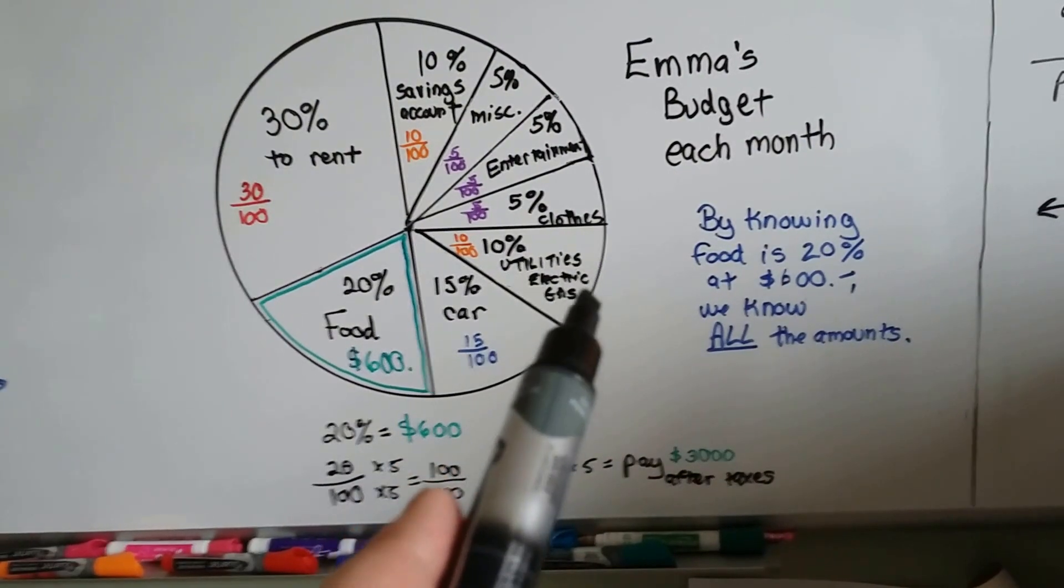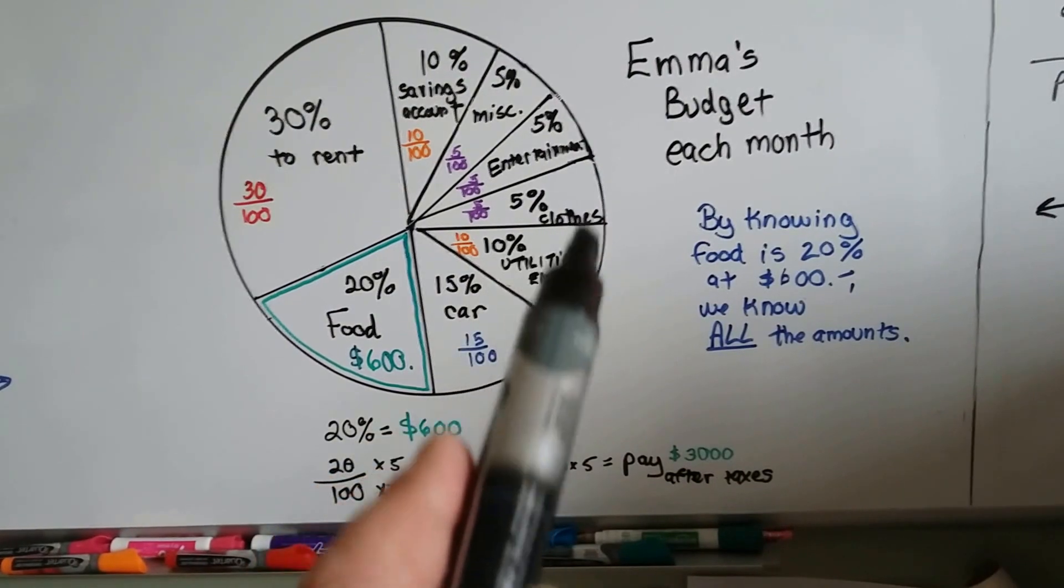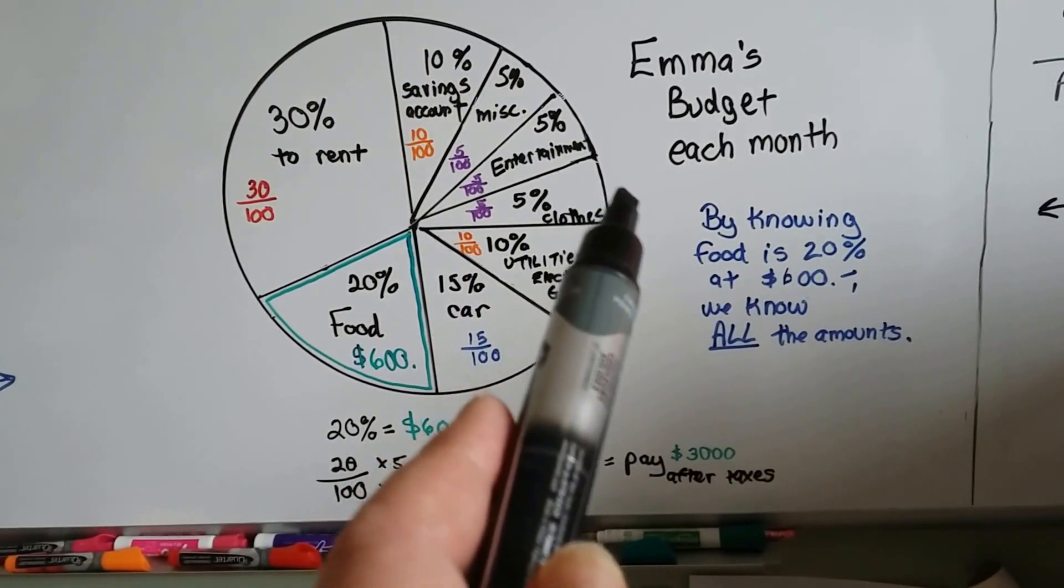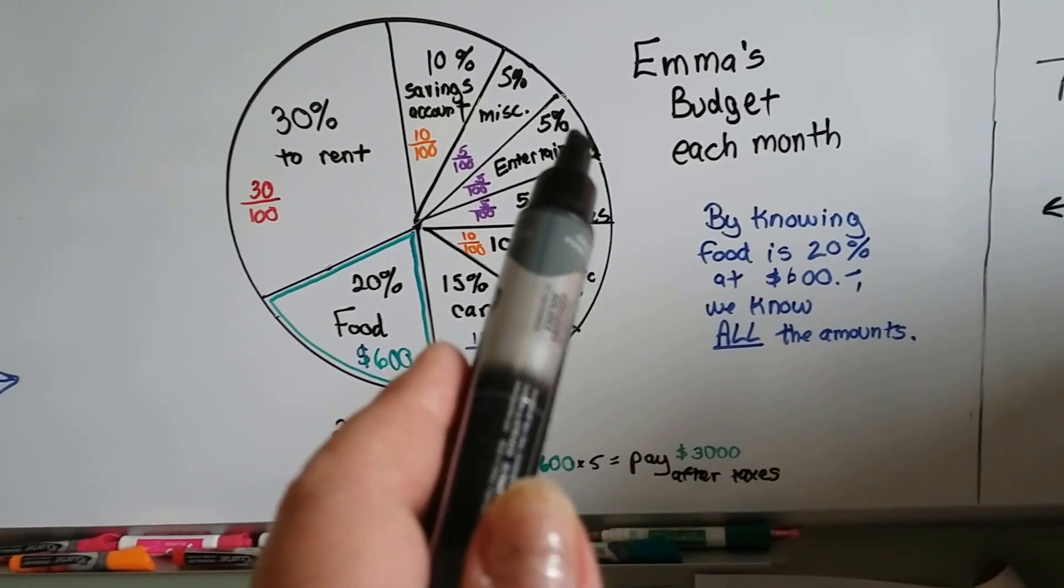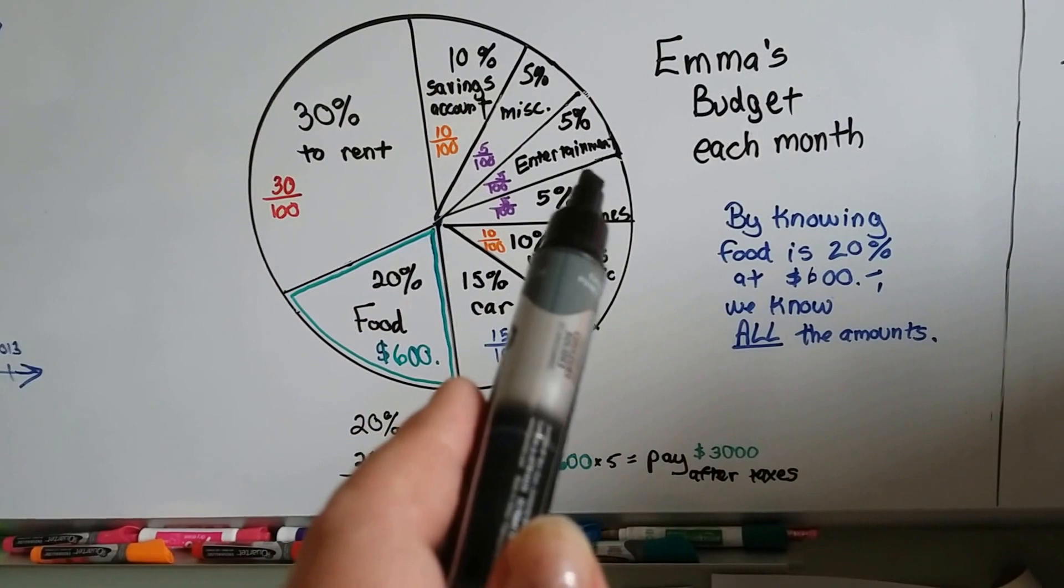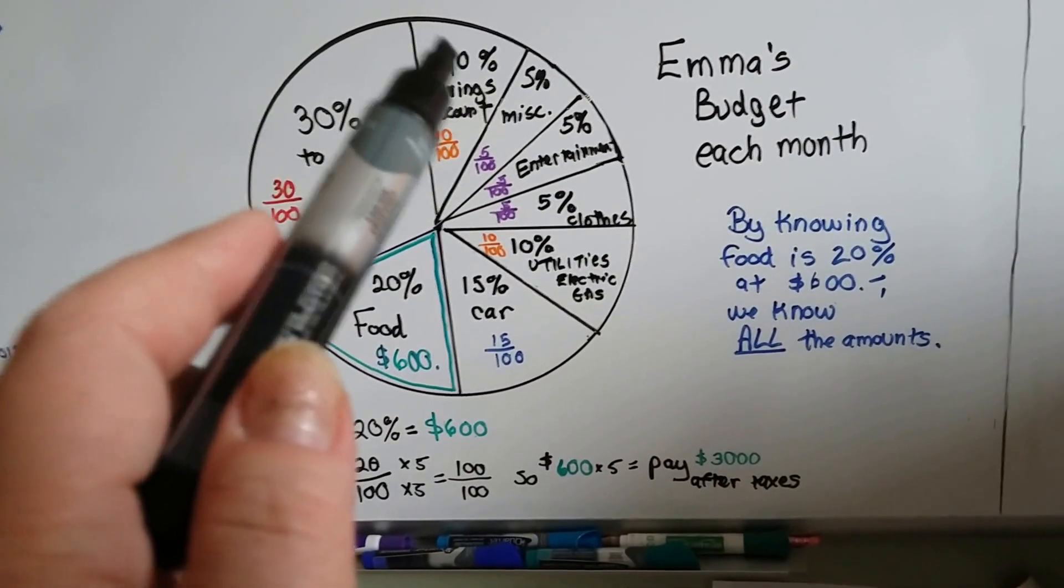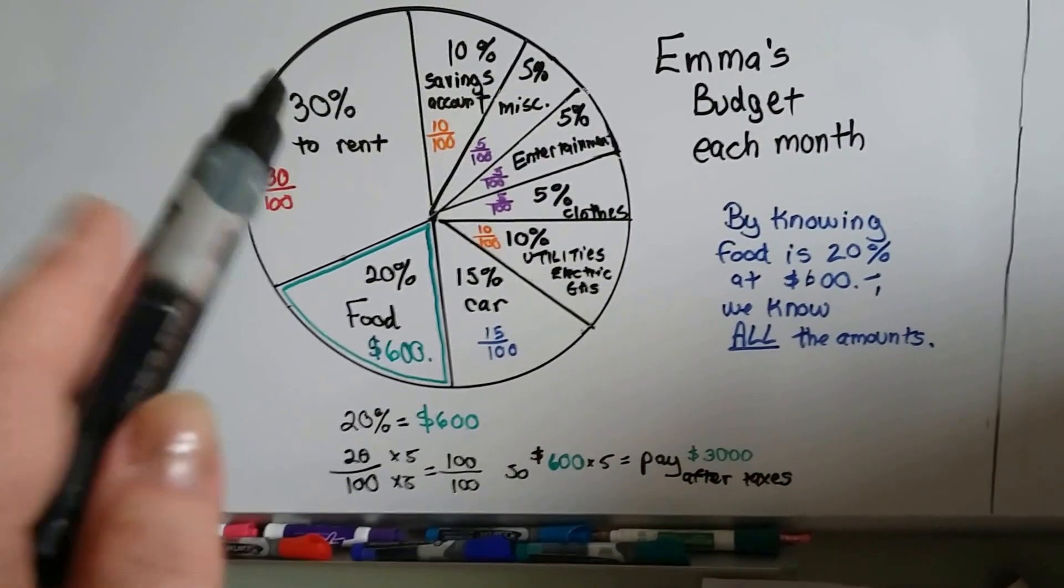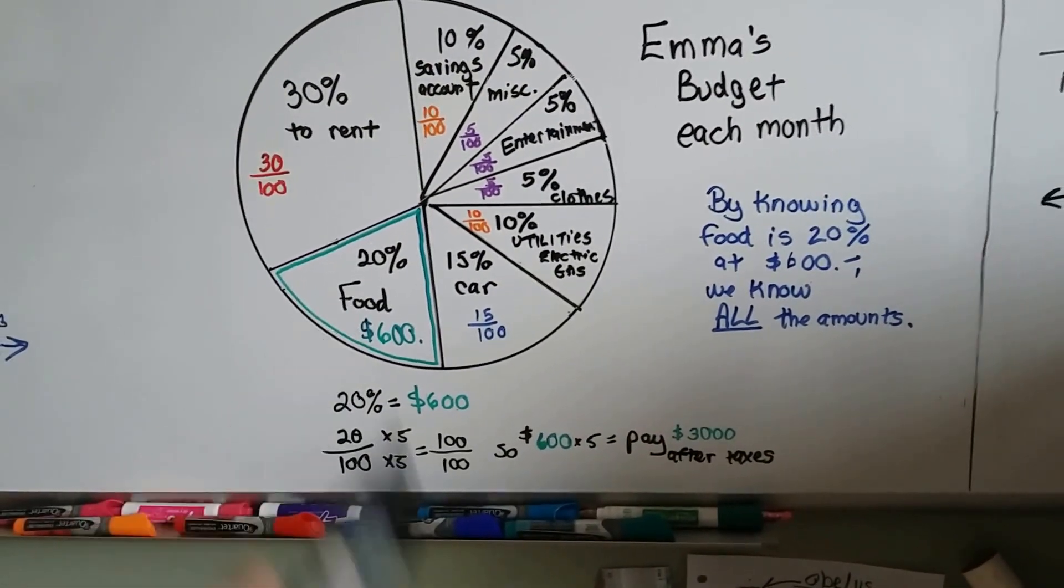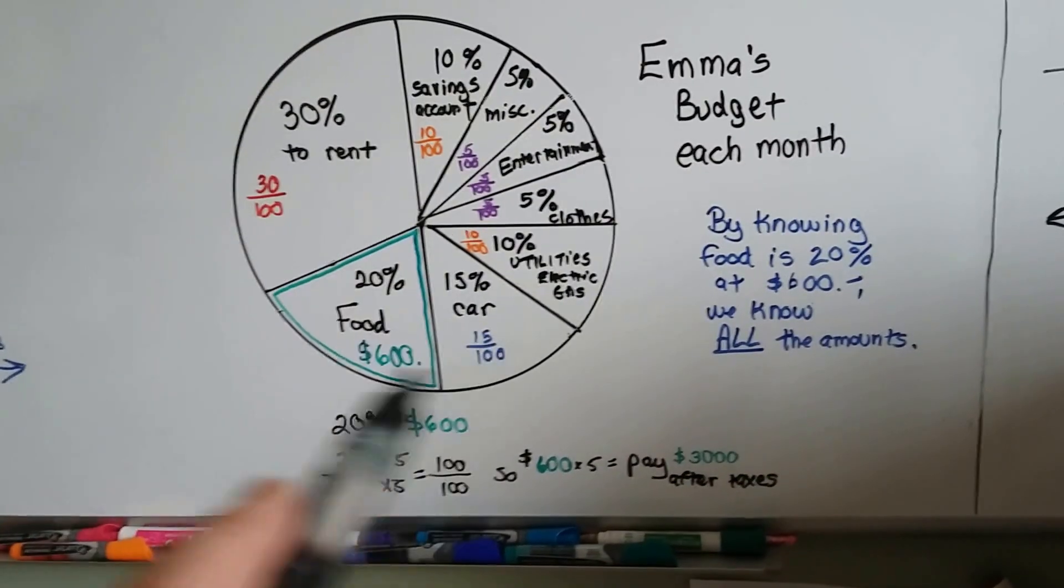And if this is 300 and she spends five percent on clothes, five is half of 10. Half of 300 is 150. So we know she spends 150 on clothes, 150 on entertainment like movies and restaurants and stuff, and 150 on miscellaneous. We also know she puts 300 each month into her savings account. And we could figure out what her rent is, all by knowing this one little piece of information. And the whole thing is 100 percent.